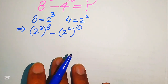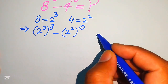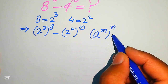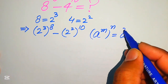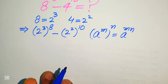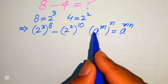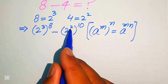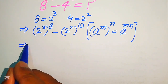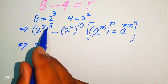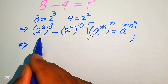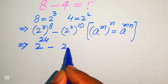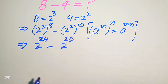In the next step we apply the exponent law: a to the power of m, to the power of n, equals a to the power of m multiplied by n. According to this law, we multiply the two exponents for each term. So we get 2 to the power of 3 times 8, which is 24, minus 2 to the power of 2 times 10, which is 20.